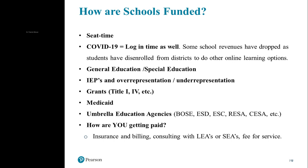Schools also get funding from what we call umbrella educational agencies — out west we call them educational service districts. These are designed to help more heavily impacted districts with specialty, high-cost, low-incidence disorders such as autism. If a district has a cluster of more severe autistic kids, those become very expensive interventions, so these umbrella education agencies will have specialized programs to supplement the school districts in providing those educational interventions.